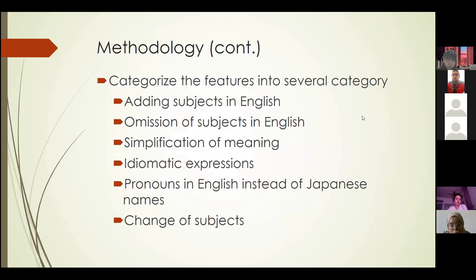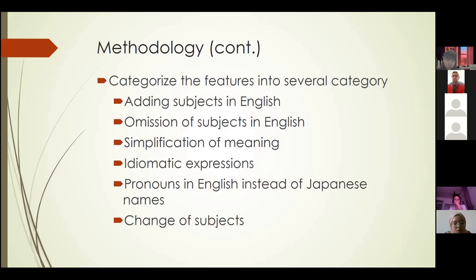For the categorization, the features I have found so far include adding subjects in English or omission of subject in English, simplification of meaning, and translation of idiomatic expressions — which can be Japanese idiom into English idiom, Japanese basic expressions into English idiom, or Japanese idiom into basic English expression. The next category is pronouns in English instead of Japanese names, because usually Japanese will refer to someone by name, but in English it would be unnatural, so it will be replaced by pronouns.